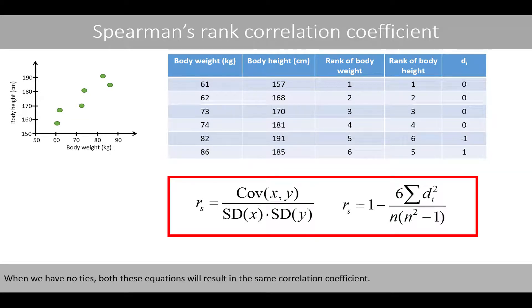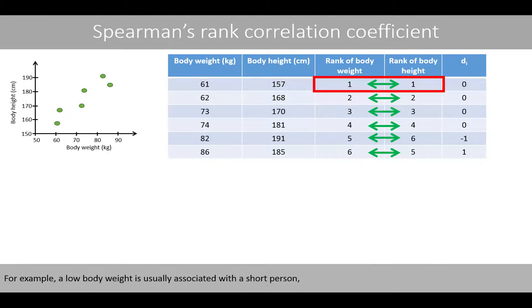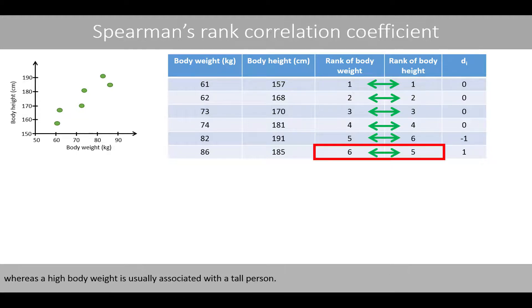When we have no ties, both these equations will result in the same correlation coefficient. Note that when we have a positive correlation, we expect that the ranks are quite similar for the two variables. For example, a low body weight is usually associated with a short person, whereas a high body weight is usually associated with a tall person.